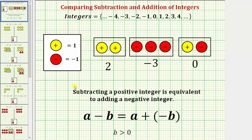Every subtraction problem has an equivalent addition problem. When working with integers, subtracting an integer is equivalent to adding the opposite. In this lesson, we'll use integer chips to show that subtracting a positive integer is equivalent to adding a negative integer — or more specifically, a minus b equals a plus negative b.